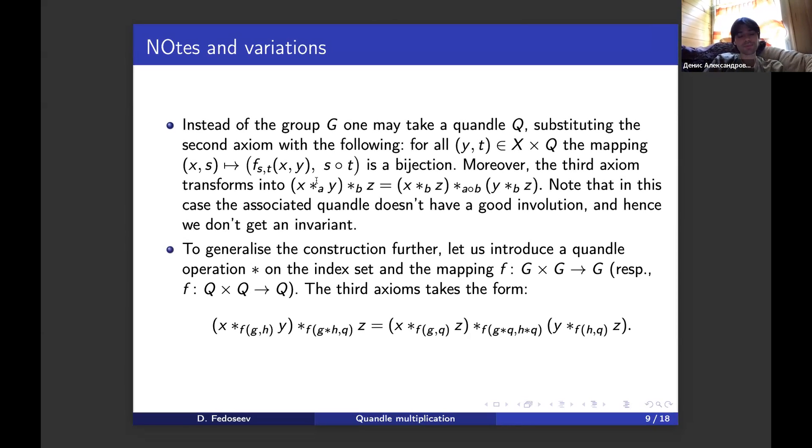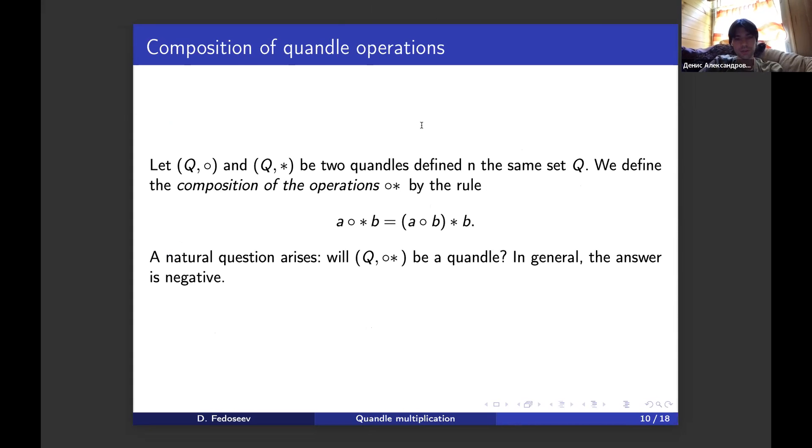Finally, that is our generalization. If we introduce another mapping f from G by G to G, and change the third axiom in the following form, it looks more convoluted but still manageable. Then we have some generalization which we call GF-family of quandels, and the G-family is a partial case. I won't delve deeper into this series of families. We have another work in progress. For now, our goal is to understand another thing: the composition of quandel operations, which was motivated by the G-family second axiom.